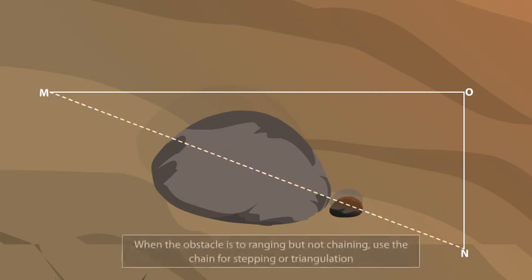As MN is the hypotenuse of the triangle, you can calculate its length with the formula: MN = √(MO² + ON²). Remember, when there is an obstacle to ranging but not chaining, you can use the chain for stepping or triangulation in order to overcome that obstacle.